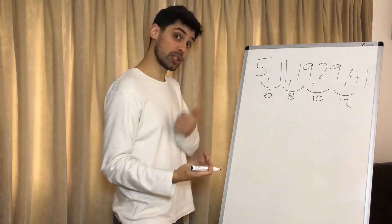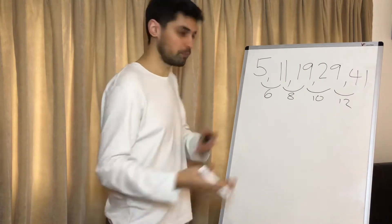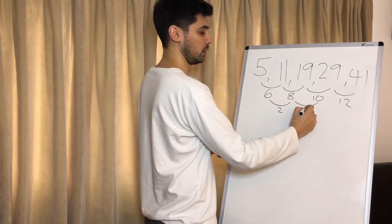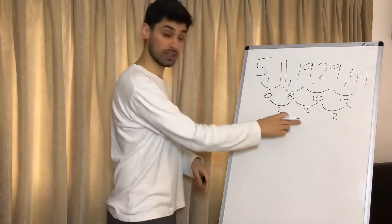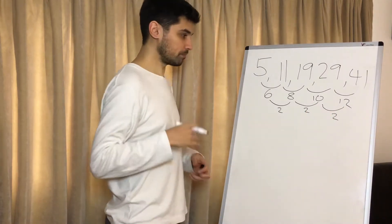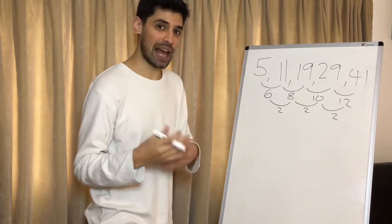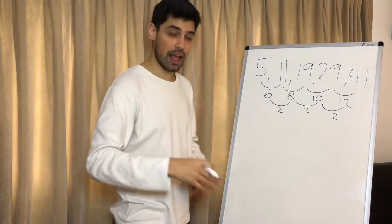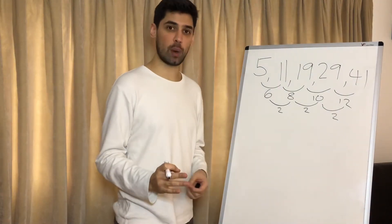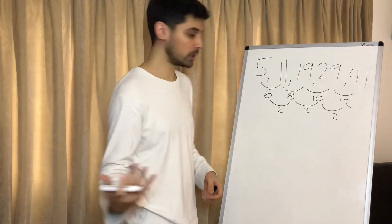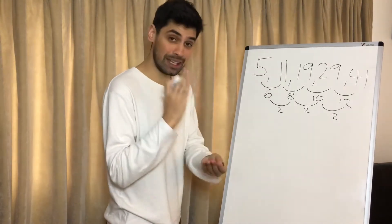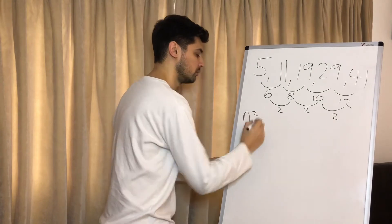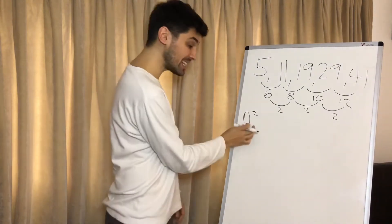So here with this quadratic sequence we've got to find the double difference — the second difference — which is 2, 2, and 2. Those are the same, that's good news. What we have to remember is this double difference we've got to half, and that is going to be the value in front of the n squared. Half of 2 is 1, so we know the beginning of our answer is definitely going to be n squared.